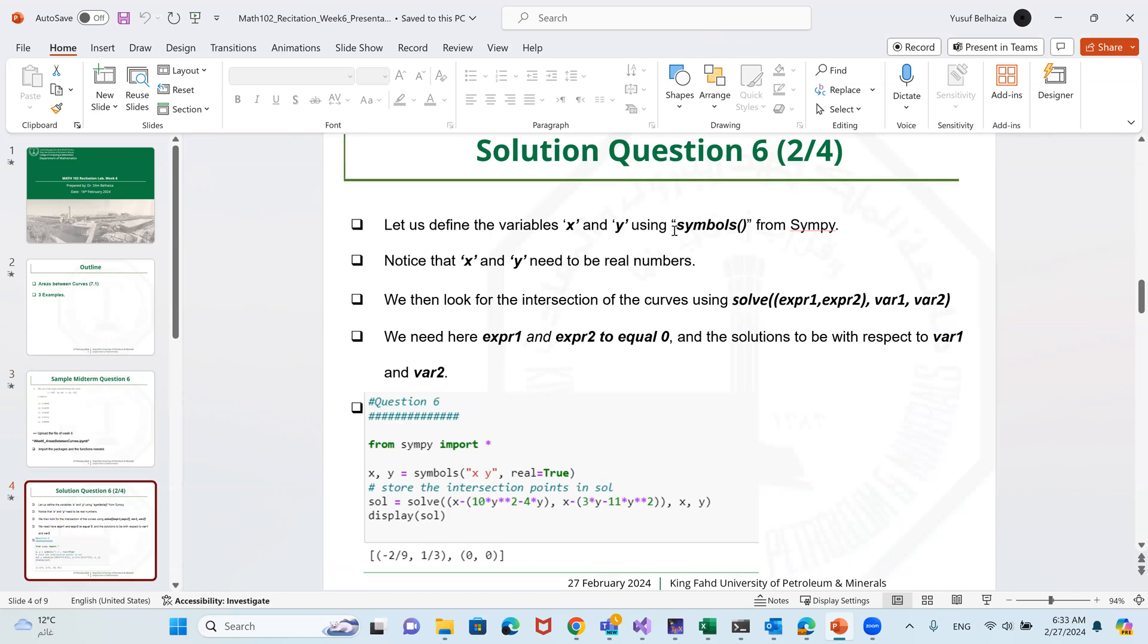First of all, what should we do? As usual, define the x and y variables using symbols from SymPy. And here, of course, you should notice that x and y need to be real numbers. We then look for the intersection of curves using the solve command, which finds the intersection between two relations or two equations or two functions. And here we need in this command expression one and expression two equals zero, and the solution to be with respect to variable one and variable two.